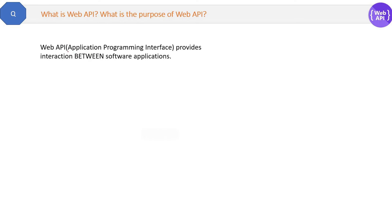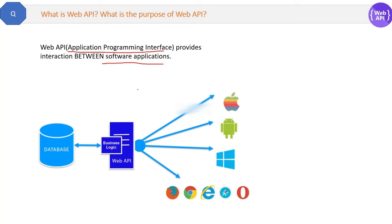What is WebAPI? What is the purpose of WebAPI? WebAPI, where API stands for Application Programming Interface, provides interaction between software applications. Now what is the purpose of WebAPI? For example, if you want to place an order on Amazon via mobile app or website, the UI is different. But for both mobile app and website, business logic is written in a common WebAPI, so that if there is any logic change, it can be done at only one place, which is easy to maintain.